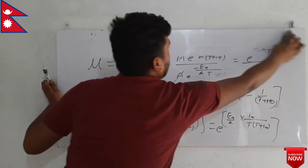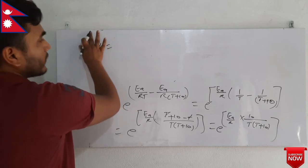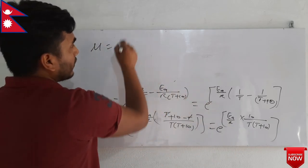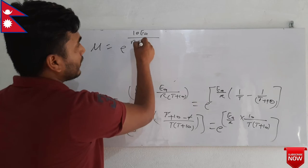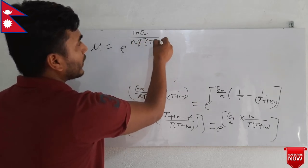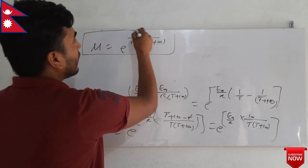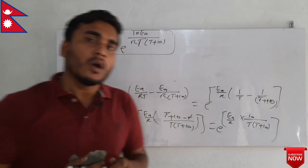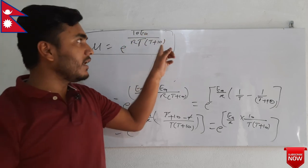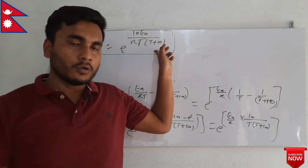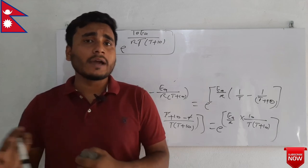So the final answer is: mu equals e to the power 10·Ea divided by R·T·(T plus 10). This is our final expression by which we can calculate the value of temperature coefficient. For this, we need the activation energy and the temperature value. That's all for today — this is all about temperature coefficient. If you like the video, please share it as much as you can.